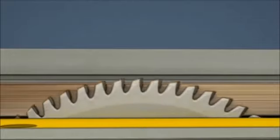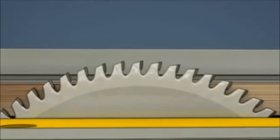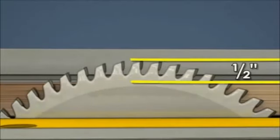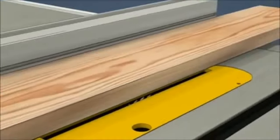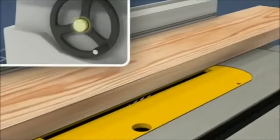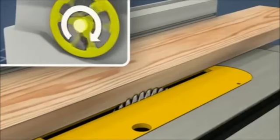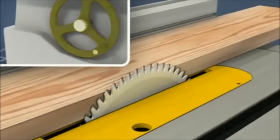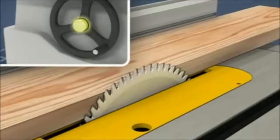The blade should be adjusted so that the top of the blade is approximately one-half inch higher than the board to be cut. To adjust the blade, first loosen the lock knob on the blade height hand wheel. Then, turn the blade height hand wheel to adjust the blade to the desired height. Always tighten the lock knob after adjusting the blade height.